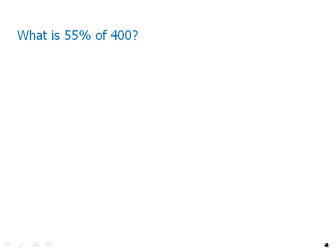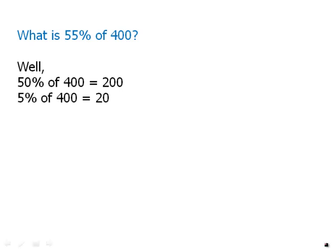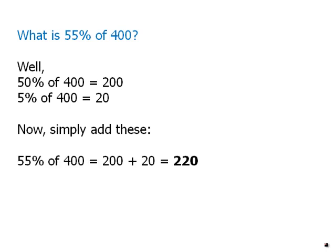55% of 400, here we're going to take a clever shortcut. Certainly, we know 50% of 400, well, that's 200. That's just half of 400, that has to be 200. We'll divide that by 10. 5% of 400 has to be 20. Well, now we can add those two. 50% plus 5% is 55%, and so 20 plus 200, that gives us 220, and that has to be 55% of 400.